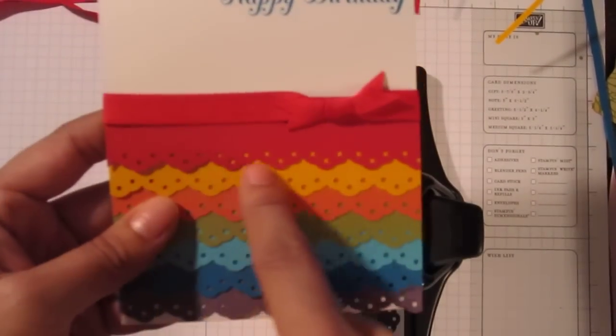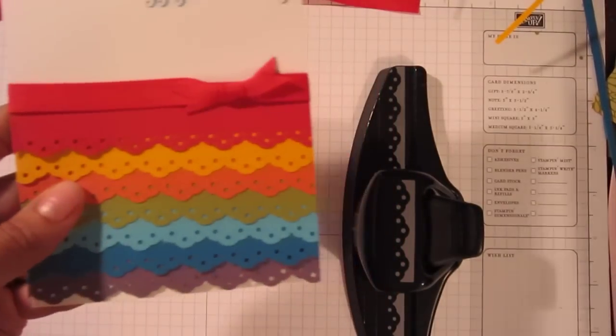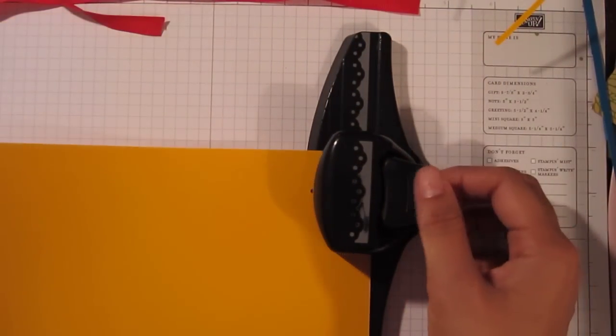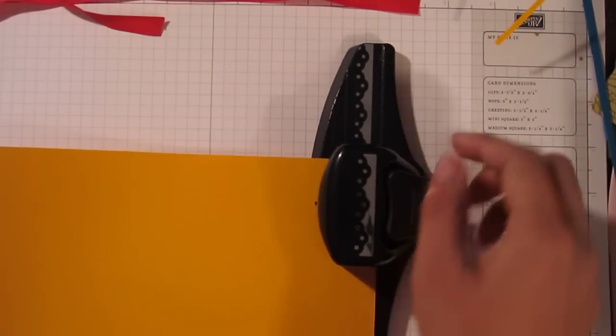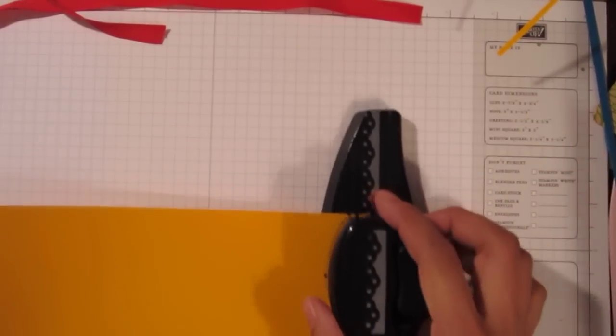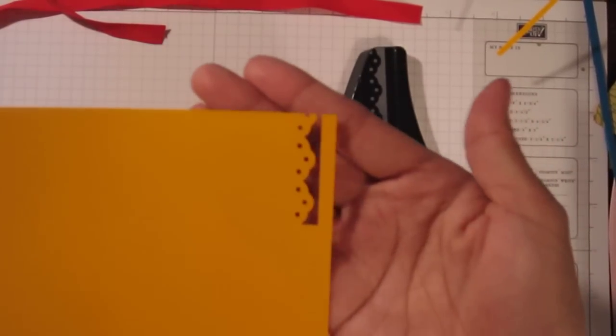So to make this border punch, you'll take the edge of your paper. I'm going to use yellow so it's really easy for you to see. And you're just going to stick it into the punch area of the punch. I want to show you how the guide works because it's really neat. So it comes out looking like this.